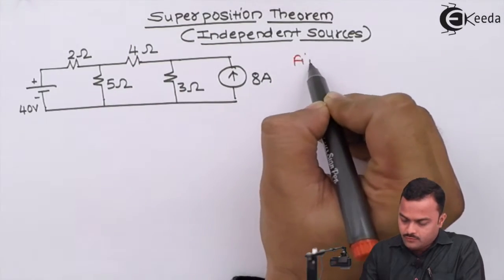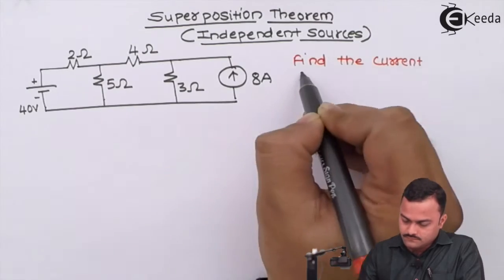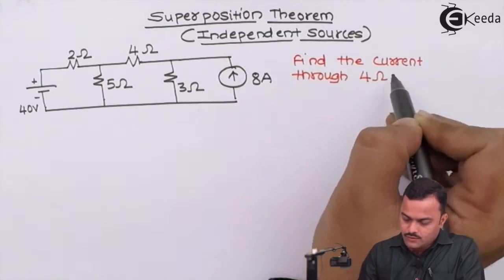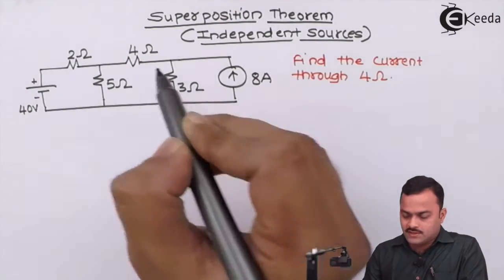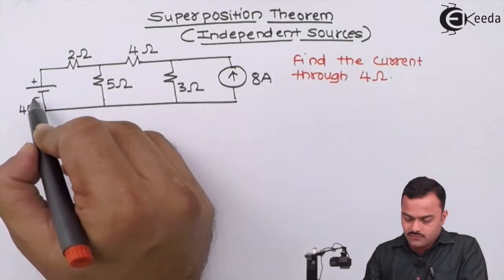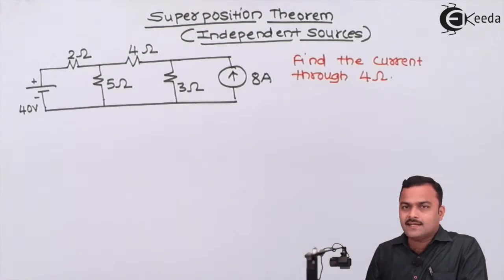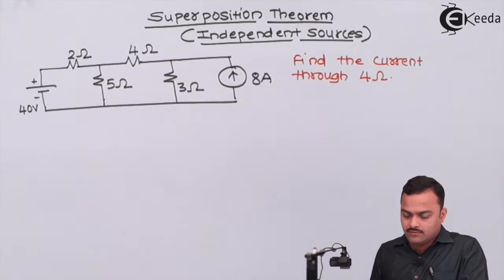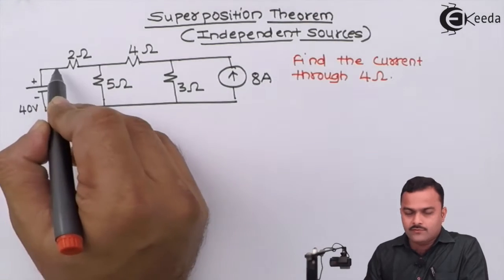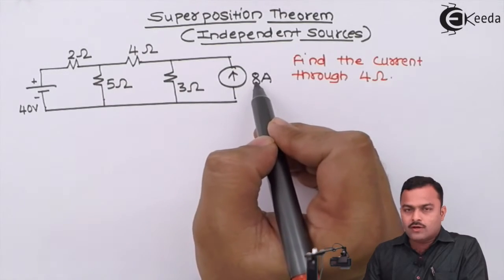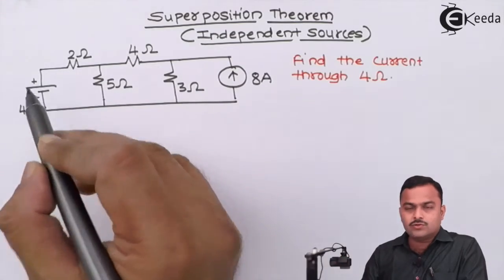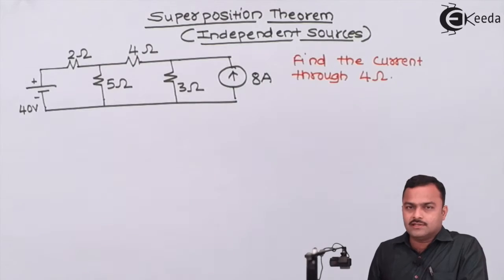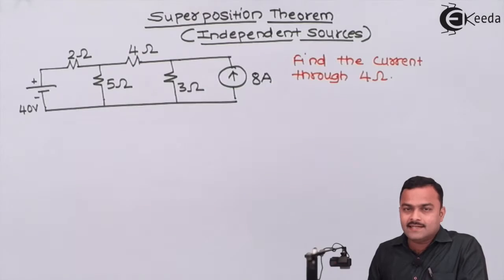Let's consider we have to get the current flowing through a 4 ohm resistor using this theorem. The theorem states that the current flowing through the 4 ohm resistor is due to the effect of the voltage source and the current source acting alone. 'Acting alone' means: when taking the effect of the 40 volt source, we should not consider the 8 ampere source, and vice versa. 'Not considering' a source means replacing it with its internal resistance.